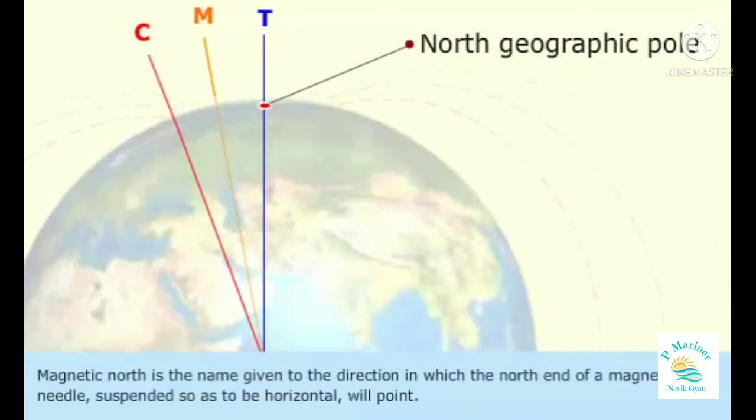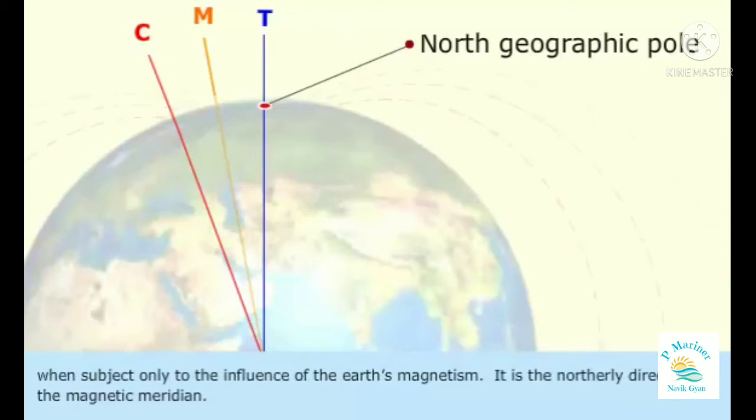Magnetic north is the name given to the direction in which the north end of a magnetic needle, suspended so as to be horizontal, would point when subject only to the influence of the Earth's magnetism. It is the northerly direction of the magnetic meridian.